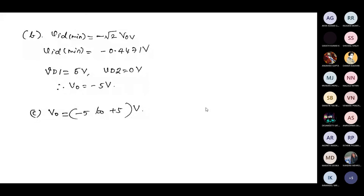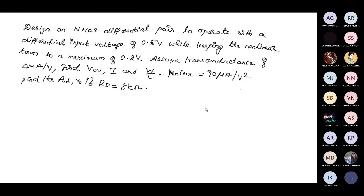We will do one more problem related to non-linear operation. Design an NMOS differential pair to operate with a differential input voltage VID of 0.5 volt while keeping the non-linear term to a maximum of 0.2 volt. The non-linear term is VID by 2 divided by overdrive voltage, whole squared. Assume transconductance GM equals 4 milliamps per volt. Mu times COX is 90 microamps per volt squared.